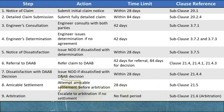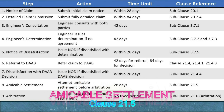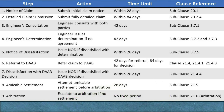Step 8: Amicable Settlement (Subclause 20.5). Action: If a notice of dissatisfaction has been issued after the DAAB's decision, the parties must attempt to settle the dispute amicably before proceeding to arbitration. This phase offers a final chance for informal resolution. Time limit: The parties have 28 days after issuing the NOD to seek an amicable settlement. If no settlement is reached within this period, either party may proceed to arbitration. Clause Reference: Subclause 21.5 — Amicable Settlement. Purpose: This phase provides an additional opportunity for resolution outside of formal arbitration, potentially saving time and resources for both parties.